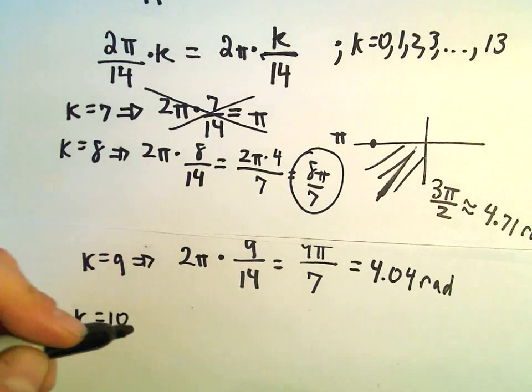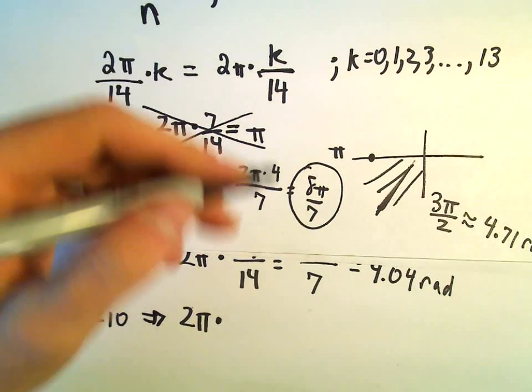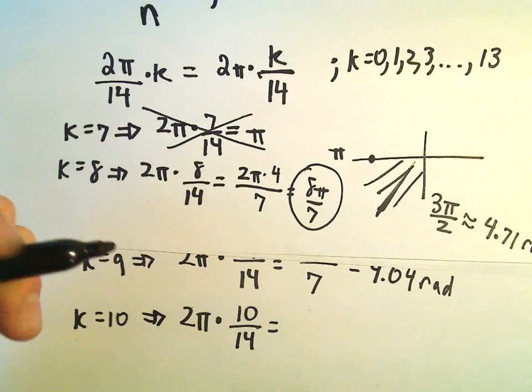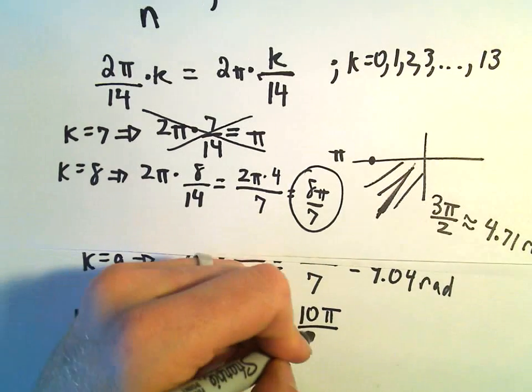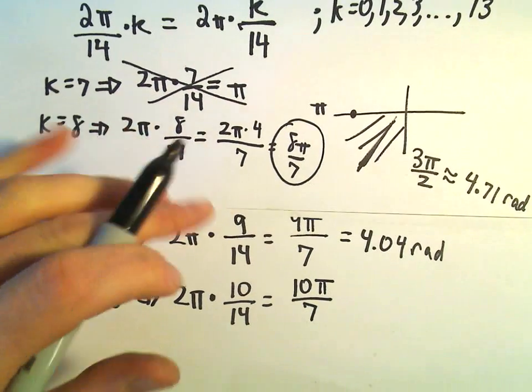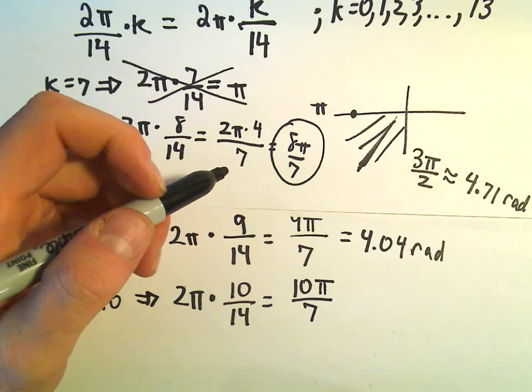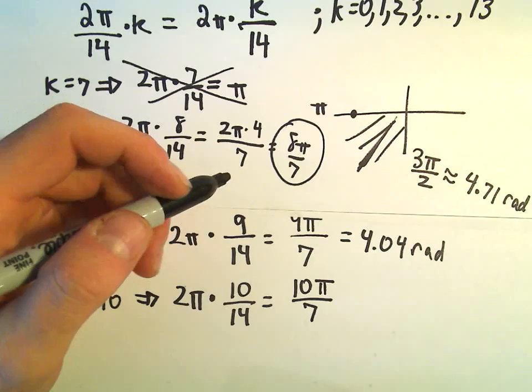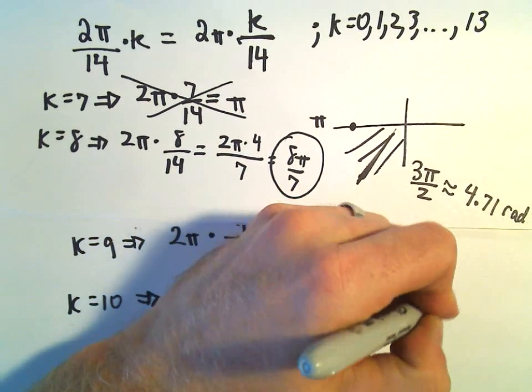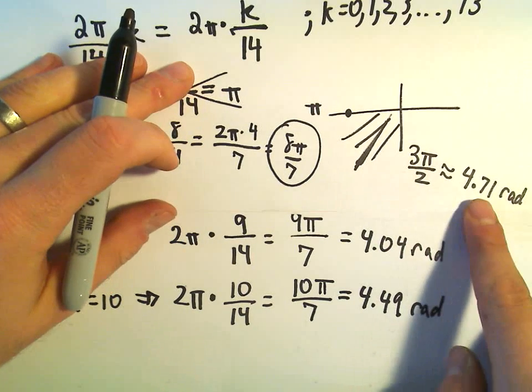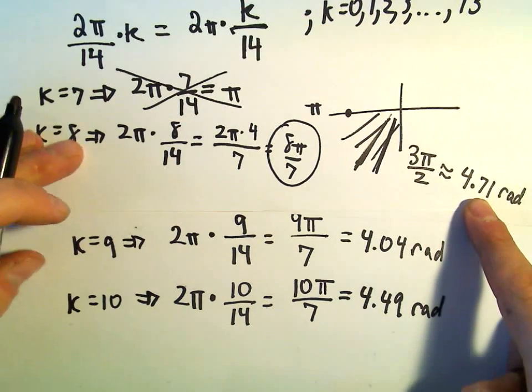We can check k equals 10. So for k equals 10, we'll get 2π, 10 over 14 in this case. We would get 10π in the numerator, 7 in the denominator. So if we take 10 and multiply that by 3.14 and then divide that by 7, I'm getting this to be 4.49 radians roughly. So 4.49 radians, that's still smaller than 4.71 radians. So that would still also be in quadrant 3.